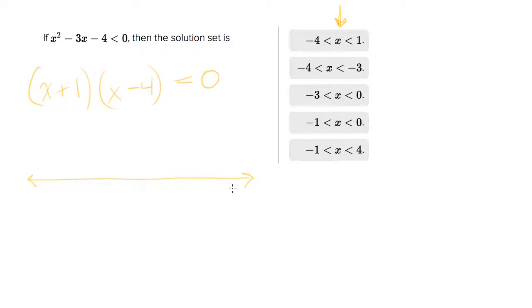For example, if we go to really large numbers for X, like say when X is 100, the first term will be positive and the second term will also be positive. 100 plus 1 is 101, 100 minus 4 is 96, both positive. So we have a positive times a positive, so when X is 100 we're up here in positive territory.